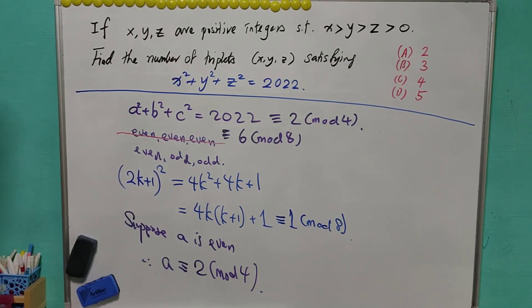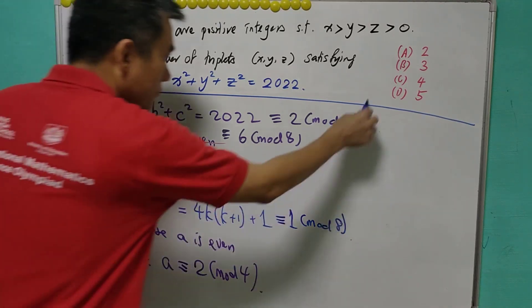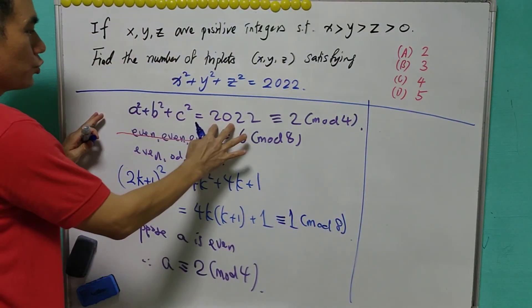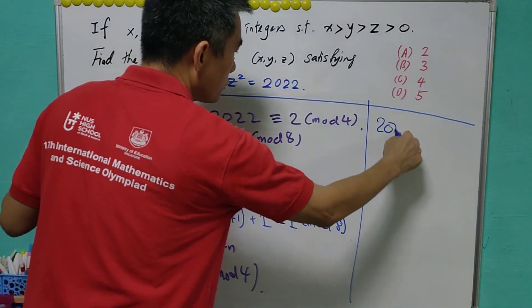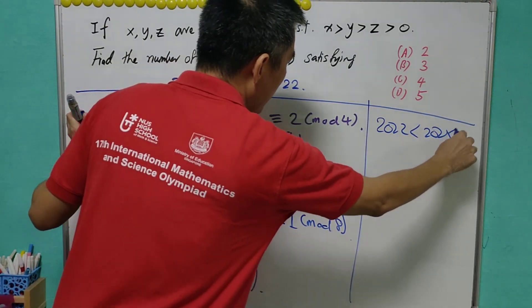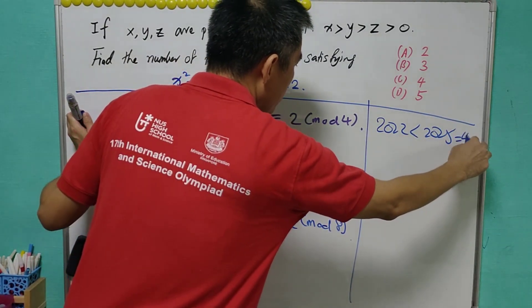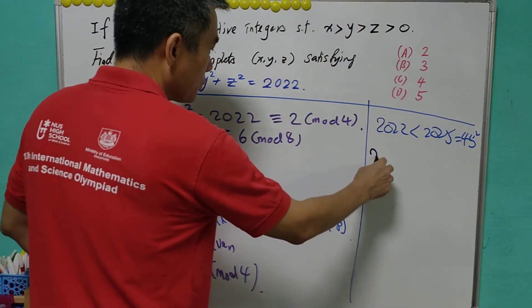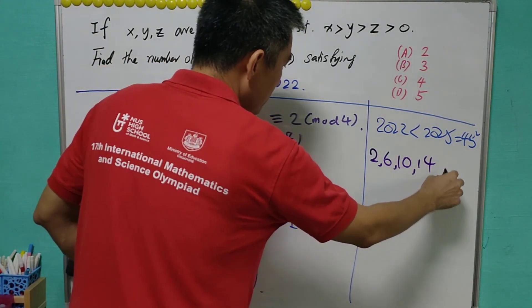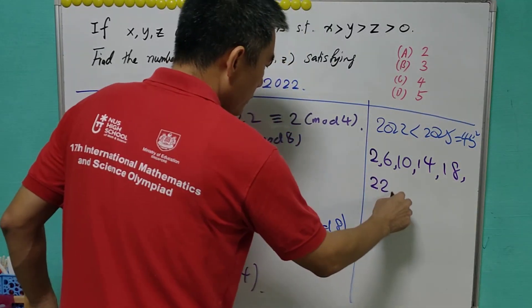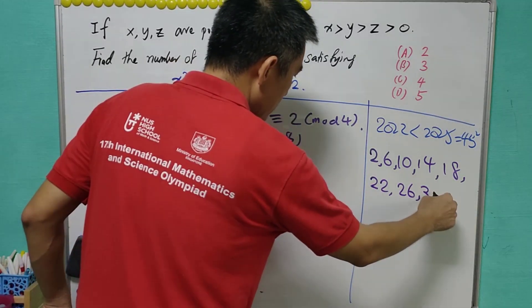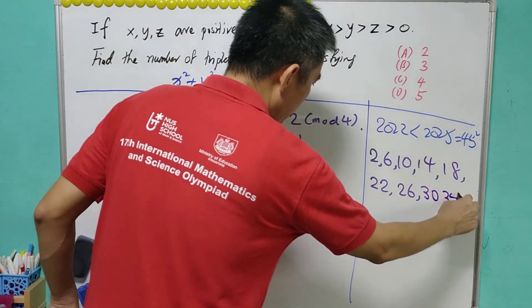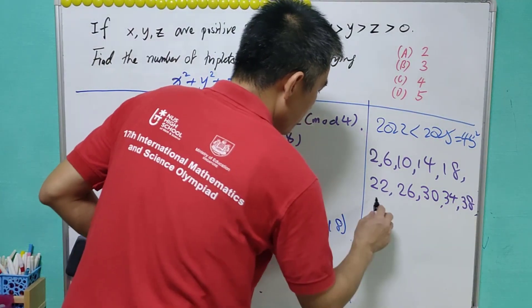With this, we actually rule out a lot of possibility because the sum is 2022 and 2022 is less than 2025, which is 45 square. Let us write down what are the possible numbers. That is 2, 6, 10, 14, 18, 22, 26, 30, 34, 38, and also 42.